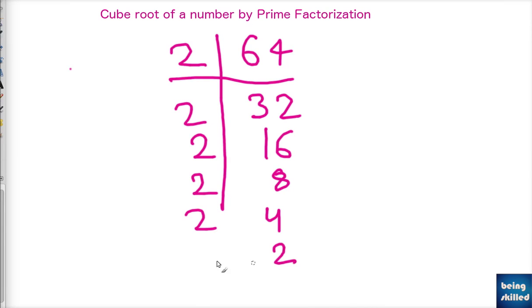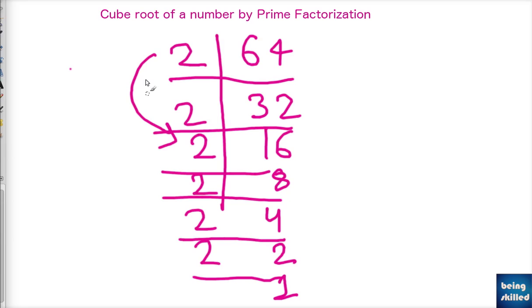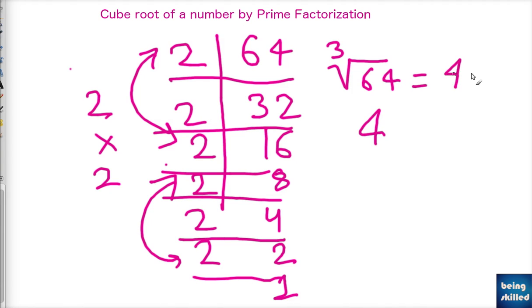So we are having 2 six times, or we can say we get this and this. So cube root of 64 is 4.